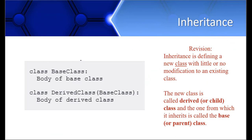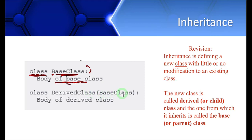In Python, whenever you create a class, we write the keyword class and then the name of the class, as discussed in the previous week. After the colon and indentation, this is the body of our class. When performing inheritance, we write round brackets with the name of the base class in front of the derived class, before the colon. This is the syntax — when you do that, the new class is automatically derived from that base class.